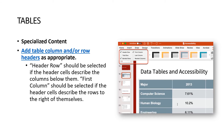Tables are a specialized type of content and are totally fine to use, though if you have a very complicated table, consider simplifying it. You need to add column and/or row headers as appropriate — columns are up and down, rows are left and right. Header rows should be selected if the header cells describe columns below them — for example, the word 'major' at the top of a column, with entries like computer science, biology, and engineering below. First column should be selected if the header cells describe the rows to the right of them.